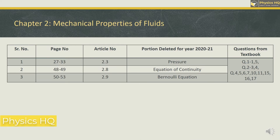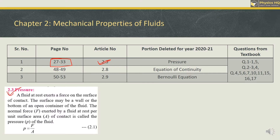Chapter 2 is Mechanical Properties of Fluids. Basically there are two topics: pressure and surface tension. These people have removed the whole topic of pressure — it was a big topic covering pages 33 to 27. After that, the surface tension topic will start. This is a pressure topic that you have to avoid now, but you should know the formula: pressure equals H-rho-g, as it is used elsewhere.